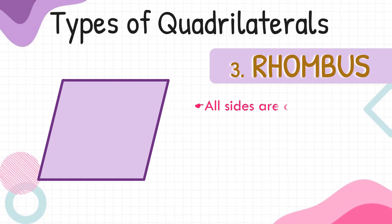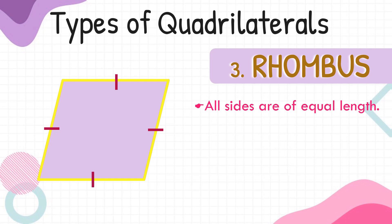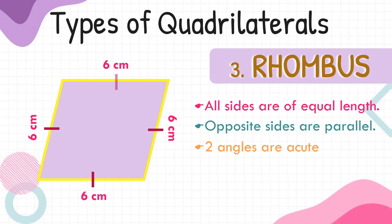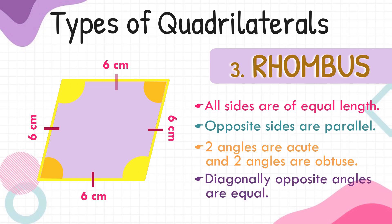The third type of quadrilateral is rhombus. Similar to squares, a rhombus has four sides of equal length. If one side measures 6 centimeters, then each of the other sides also measures 6 centimeters. A rhombus also has two pairs of parallel lines, similar to squares and rectangles. Two angles in the rhombus are acute and the other two are obtuse. Diagonally opposite angles are equal — if one angle measures 70 degrees, its opposite is also 70 degrees; if another measures 110 degrees, its opposite also measures 110 degrees.